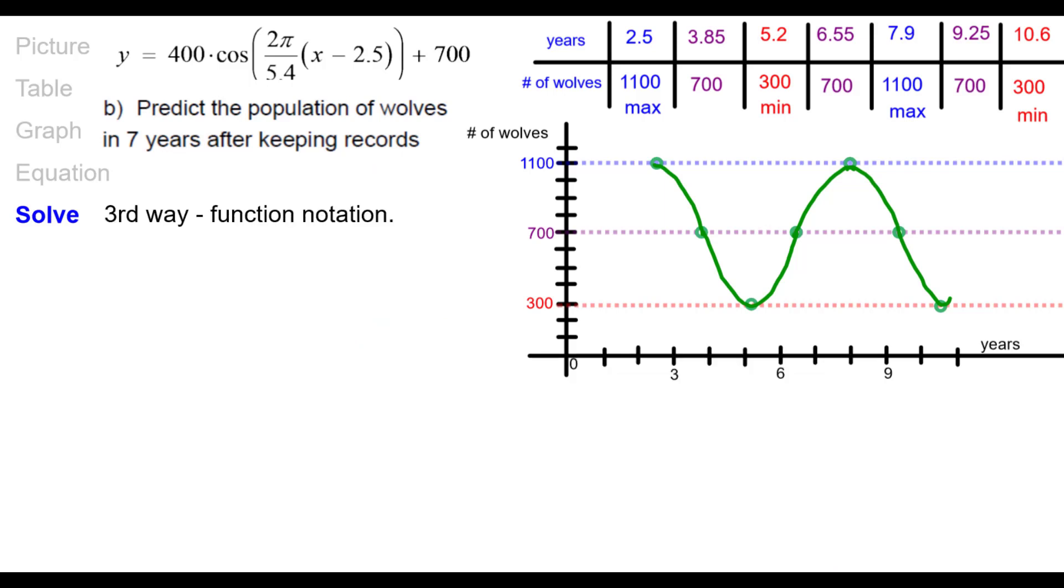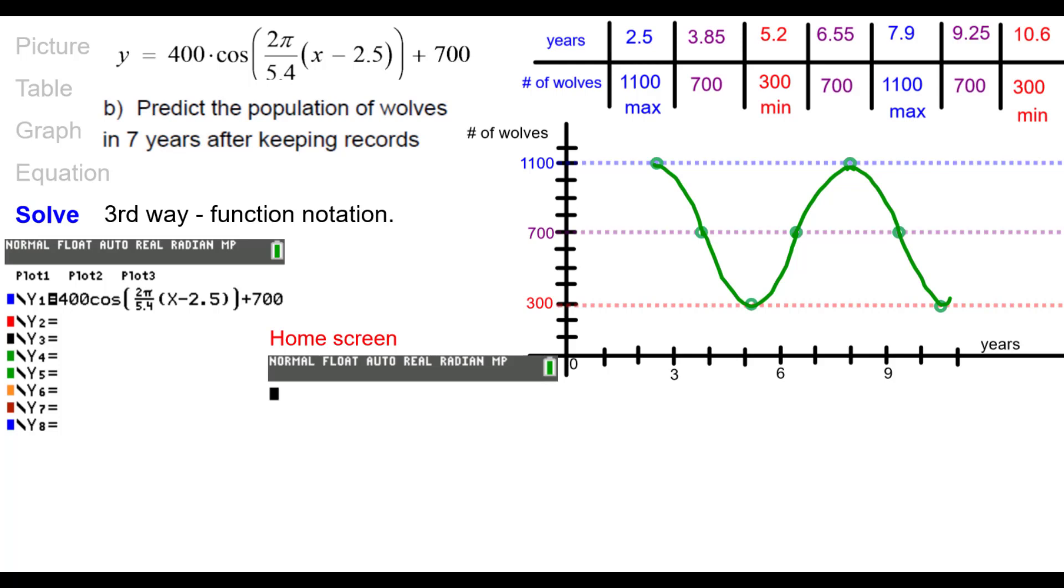Third way, which I really like, is function notation. We still have this equation typed into y1. You go to the home screen and then bring up y1 and evaluate it. Left parentheses, seven right parentheses. Just like you'd say f at seven, y1 at seven. And again, you get the same answer, 900 wolves. Pause as needed.